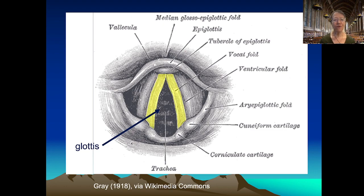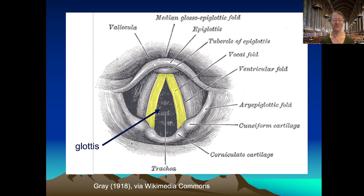The vocal folds show up here in yellow — they're actually more extensive and go off to the side, but they are here partially occluded by the ventricular folds, which are also referred to as the false vocal folds. Those only get used to produce sounds in the context of something like growling or gargling; most of the speech function is carried by the vocal folds.